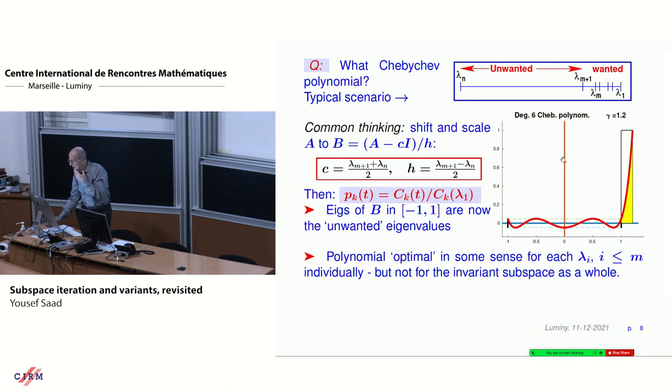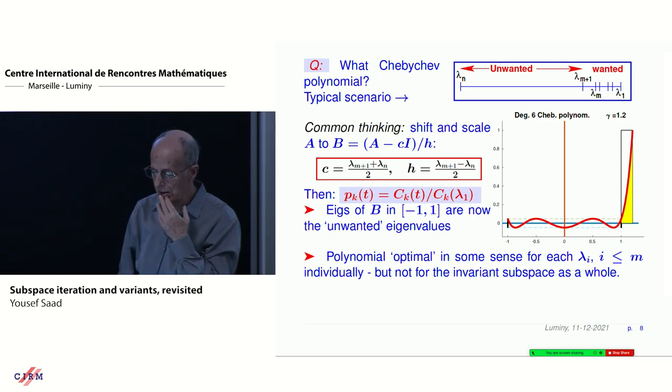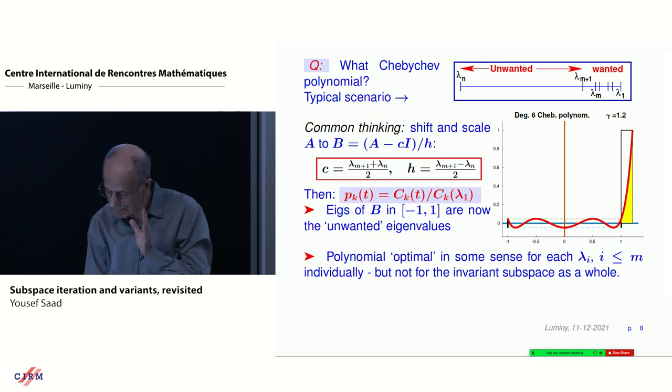The key here is not as much the Rayleigh-Ritz projection, the key is to select the polynomial, the degree in the polynomial every time. What you see here is what is the best polynomial, or what is thought to be the best polynomial. You take a Chebyshev polynomial that has, you map the matrix A into this new matrix here. You shift it and scale it so that the eigenvalues you don't want are now between minus 1 and 1.